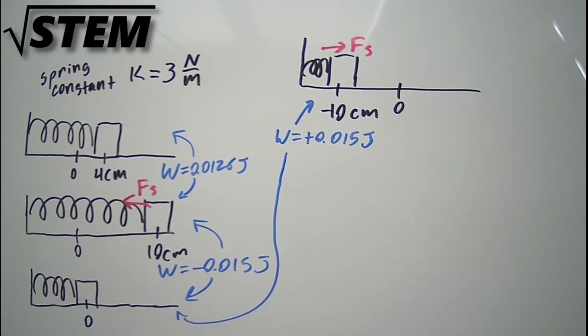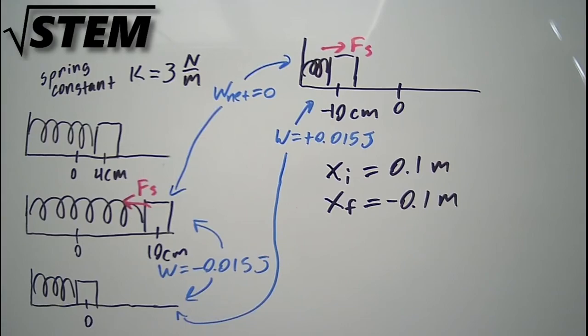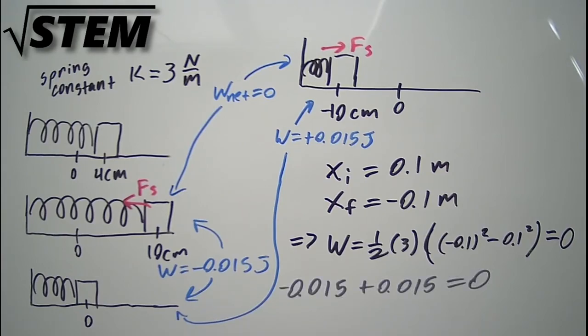Notice that as the block went from positive 10 centimeters to minus 10 centimeters, the net amount of work done was actually zero. We can verify this by using a final x position of minus 10 centimeters and an initial position of plus 10 centimeters, or we can add the work done from the previous two steps to also get zero.